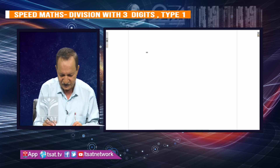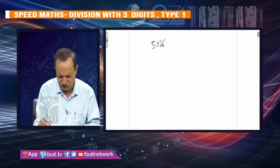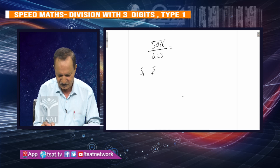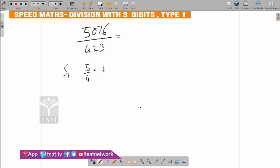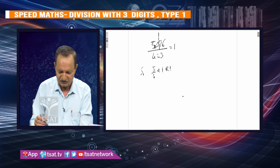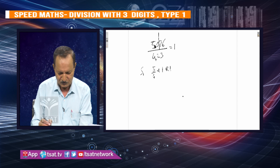5 minus 0. Step 1. 5 minus 4. 5 minus 5. Reminder, quotient, reminder. Next step. MSD. MSD. Worker. Set.